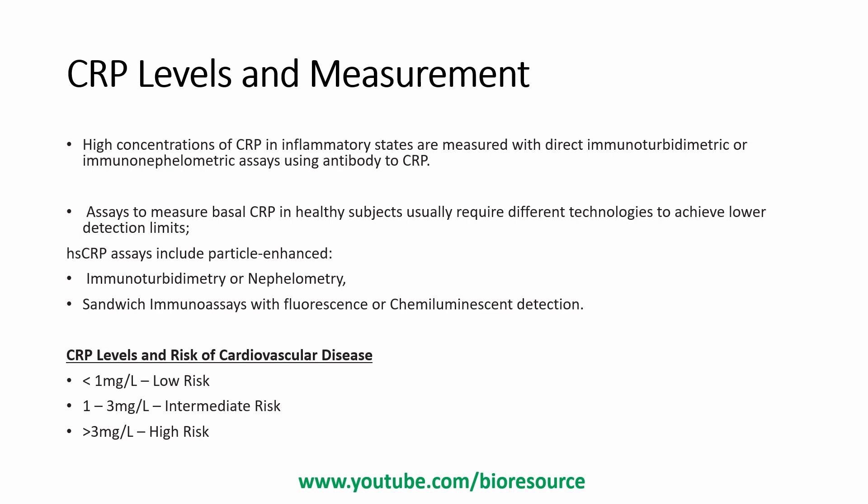Using high-sensitivity CRP, the CRP level and risk of cardiovascular disease is assessed as follows: less than 1 mg/L indicates low risk for cardiovascular disease; 1 to 3 mg/L shows intermediate risk; and greater than 3 mg/L shows high risk for cardiovascular disease.